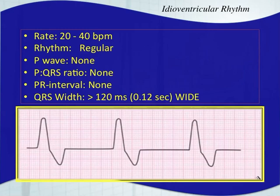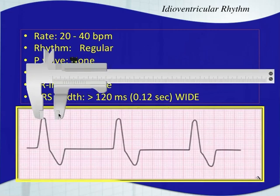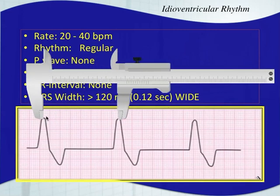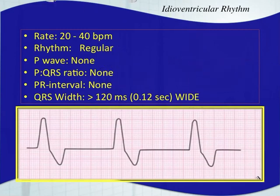The rhythm should be regular. Your R-to-R interval, just like many of the other rhythms we've talked about, should be regular. You won't see a P wave before the QRS complex with a normal PR interval. With ventricular arrhythmias, you may see P waves, but there's no marriage there — nothing that says the P wave is causing the QRS complex. So they're kind of divorced. With the idioventricular rhythm, you probably won't see a P wave at all.